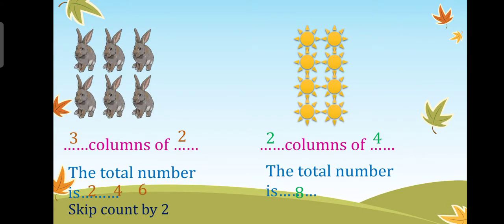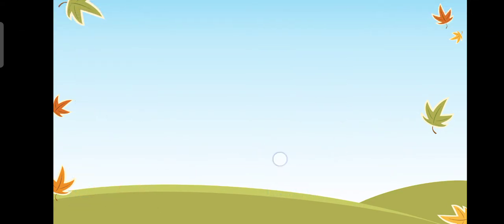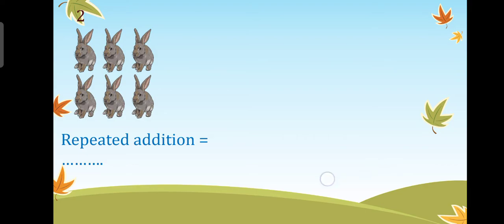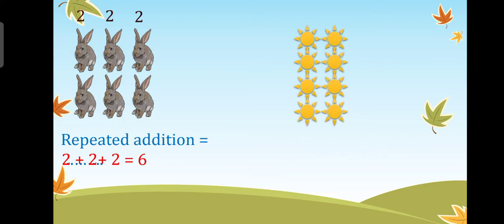Hello, we're back again. Now we have this set of rabbits. We need to use repeated addition to find the total number. Each column has two rabbits, so it will be two plus two plus two equals six.